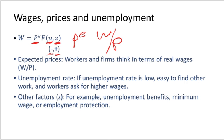The last variable is Z, the catch-all variable. Z represents all factors that affect wages given the expected price level and the unemployment rate, such as unemployment benefits. Higher unemployment benefits make the prospect of unemployment less distressing and increase the reservation wage. This means that without unemployment benefits some workers would have little to live on and would accept lower wages, but with benefits their reservation wage increases and they won't work for any wage lower than their unemployment benefit.